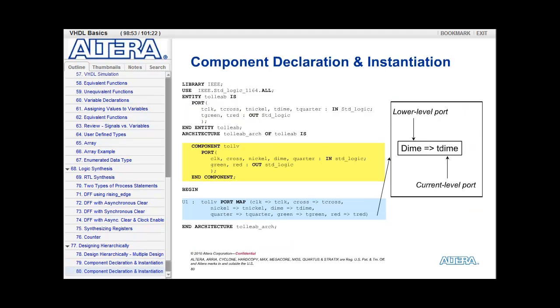So let's look at an example of this being done. We have an upper-level block or an entity called Toll EAB. And in Toll EAB, we're including a component called Toll V. So again, we have to do two things, the component declaration and the component instantiation. So in yellow, we have the component declaration. We're defining Toll V and its ports, which include the input ports, clock, cross, nickel, dime, and quarter, and the output ports, green and red. Then down in the architecture body, we do the instantiation. With the instantiation, we call this instance U1, colon, the name of the lower-level block, Toll V, and then the port mapping.